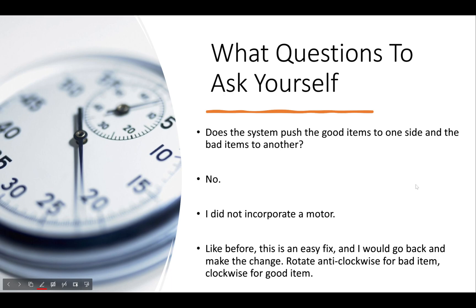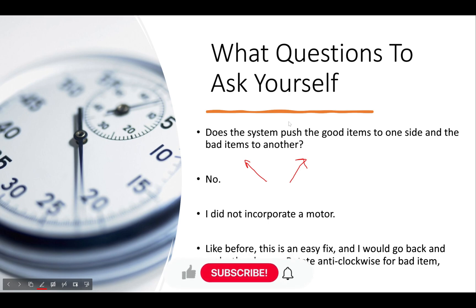Does the system push good items to one side and bad items to the other? No — I did not incorporate the motor. I have a tutorial video on the Raspberry Pi Pico covering both the servo motor and stepper motor. I would personally use a stepper motor as it's easy to use and more precise. In the if statement, if it's a bad item rotate the stepper motor left; if it's a good item rotate it right. That's all that would be needed. That covers my Activity 5 — next I'll simply show a few tests and how I filled in some examples.